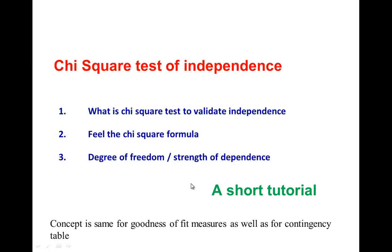The second thing we are going to do is get a feel of the chi-square formula. Note that the formula we discuss here is very important because the same concept applies for goodness of fit as well as for contingency tables. We are also going to understand what degree of freedom is, and in some circumstances how to check the strength of association among a set of variables relative to the dependent variable.